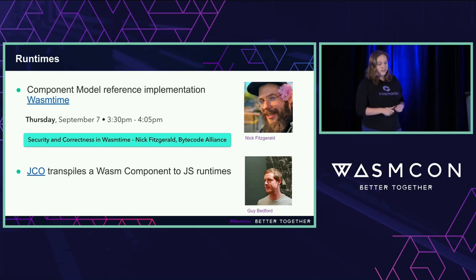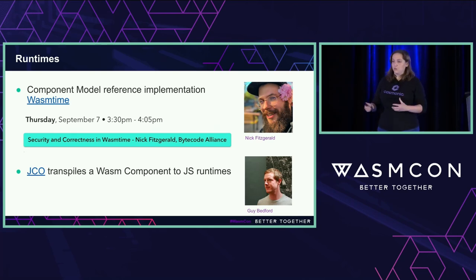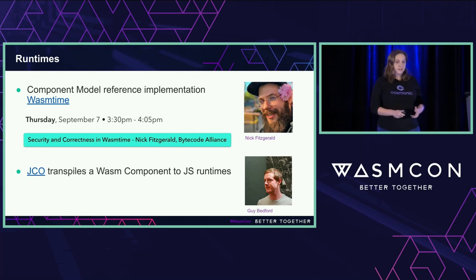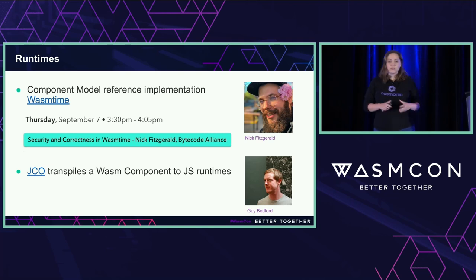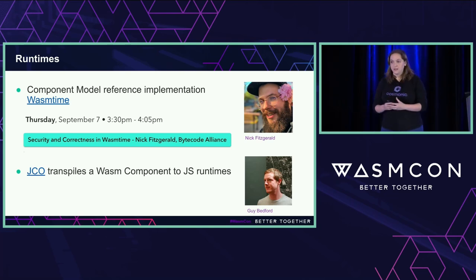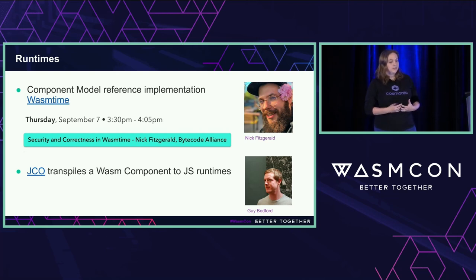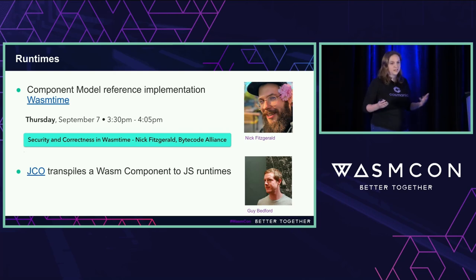JCO transpiles a WASM component into JavaScript runtimes so you can run it in browsers and in Node.js. These are two different places where I can take a component and run it. These runtimes I consider: yes, we are componentized yet — I can take a component and run with it.